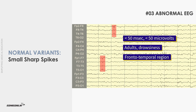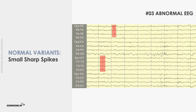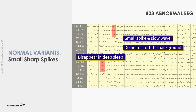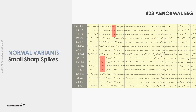They are seen in adults during drowsiness and light sleep, located in the frontal temporal regions, unilaterally or bilaterally in an independent manner. They are sometimes immediately followed by a waveform in the theta or alpha frequency range, creating the appearance of a small spike in slow wave complex. Unlike epileptiform discharges, they do not distort the background and have a tendency to disappear during deeper levels of sleep.